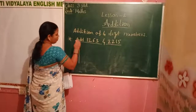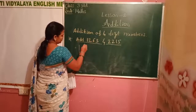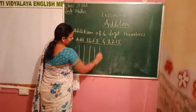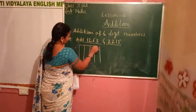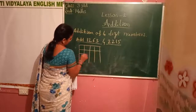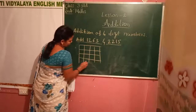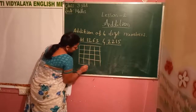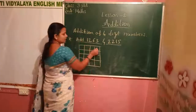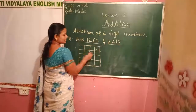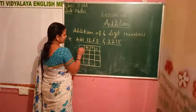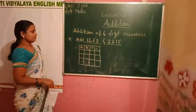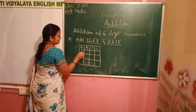First, make a column — ones place, tens, hundreds, and thousands. Make it look very neat. That is ones place, tens, hundreds, and thousands. Put the numbers in the given column.